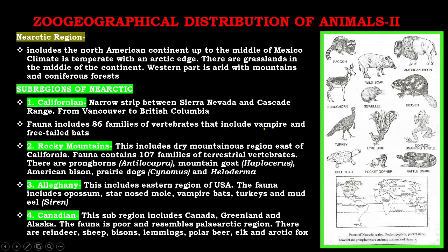Number two is the Rocky Mountain sub-region, which includes the dry mountainous region east of California. Fauna contains 107 families of terrestrial vertebrates. There are pronghorns (Antilocapra), mountain goat (Oreamnos), American bison, prairie dogs, Dipodomys, and Heloderma. Number three is the Alleghenian sub-region, which includes the eastern region of the USA. Fauna includes opossum, star-nose mole, wild turkeys, and mud eel (Siren).